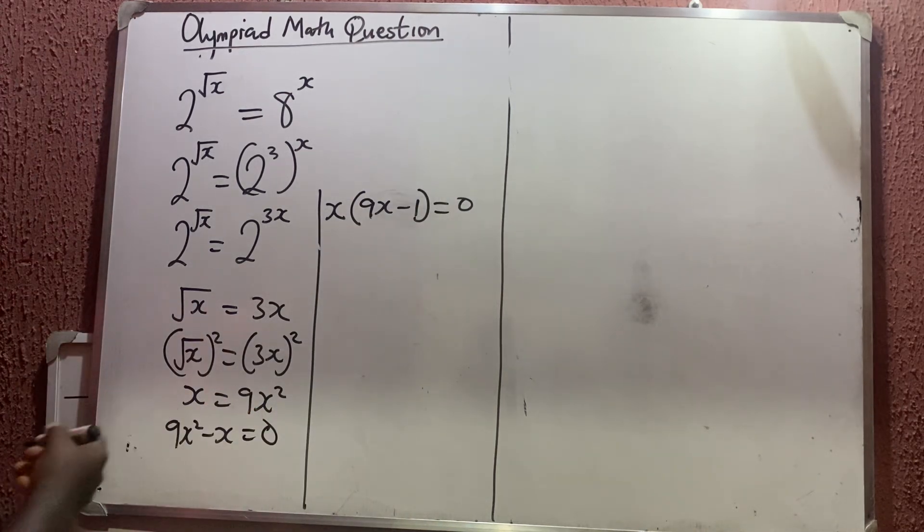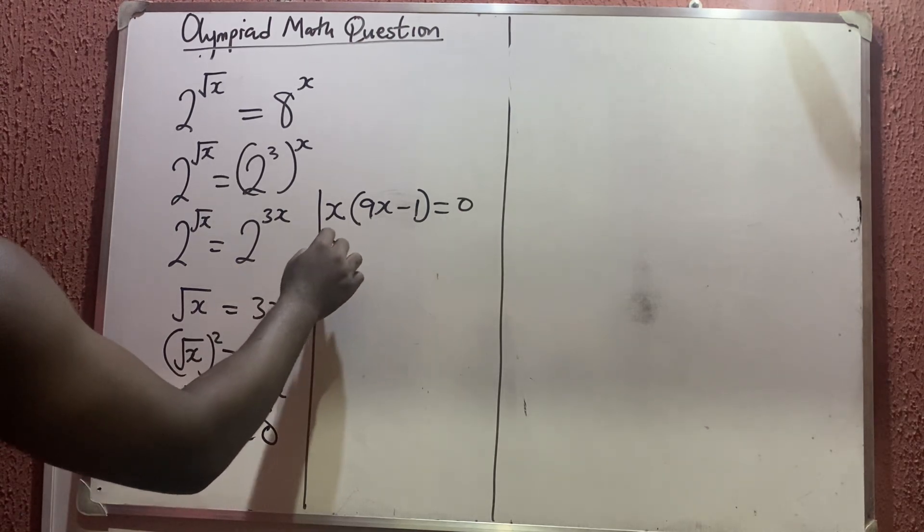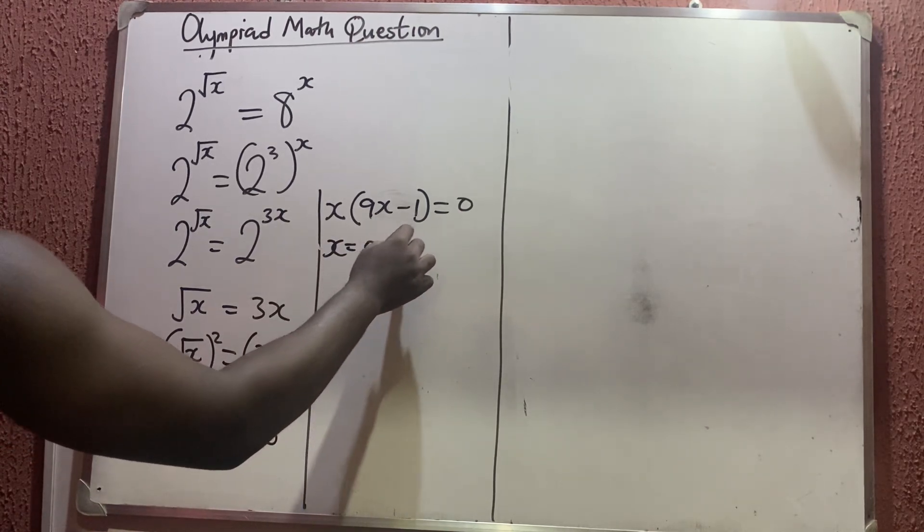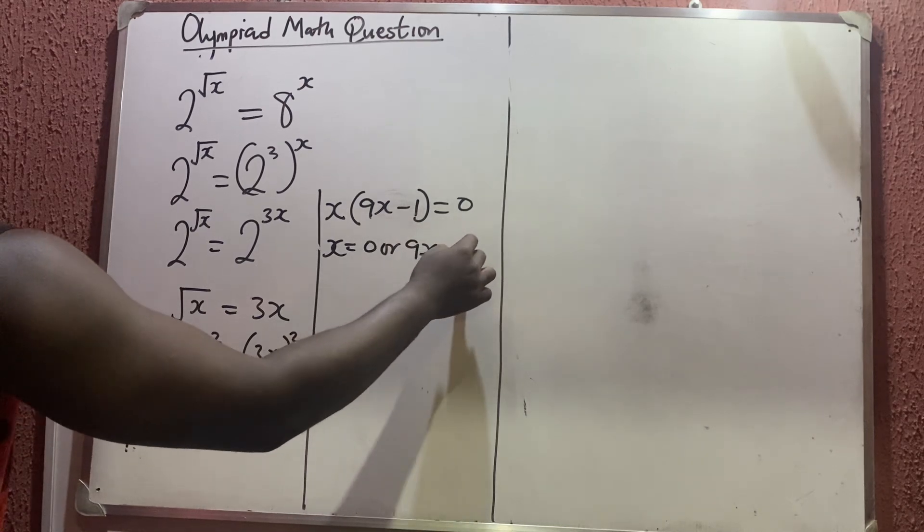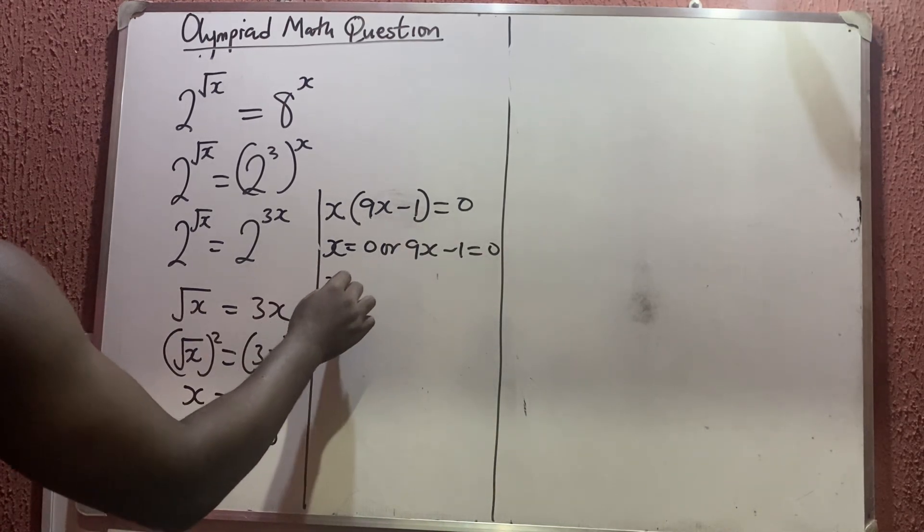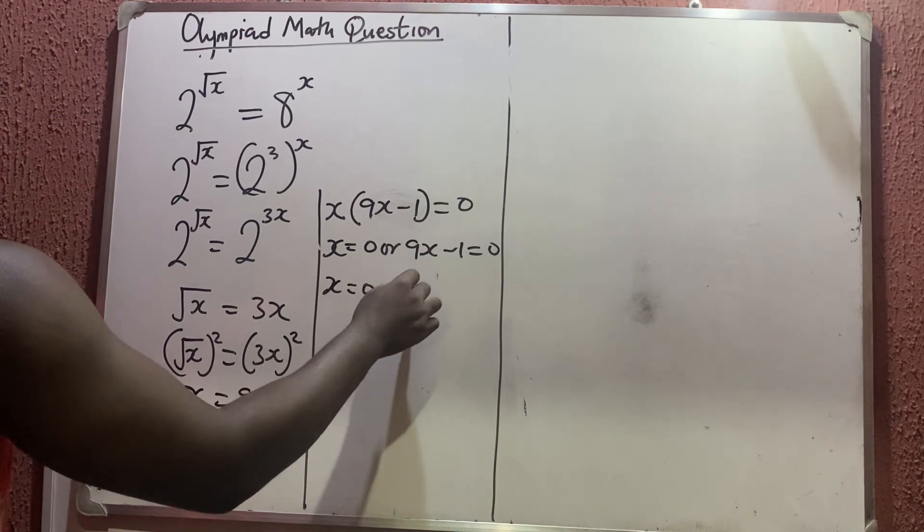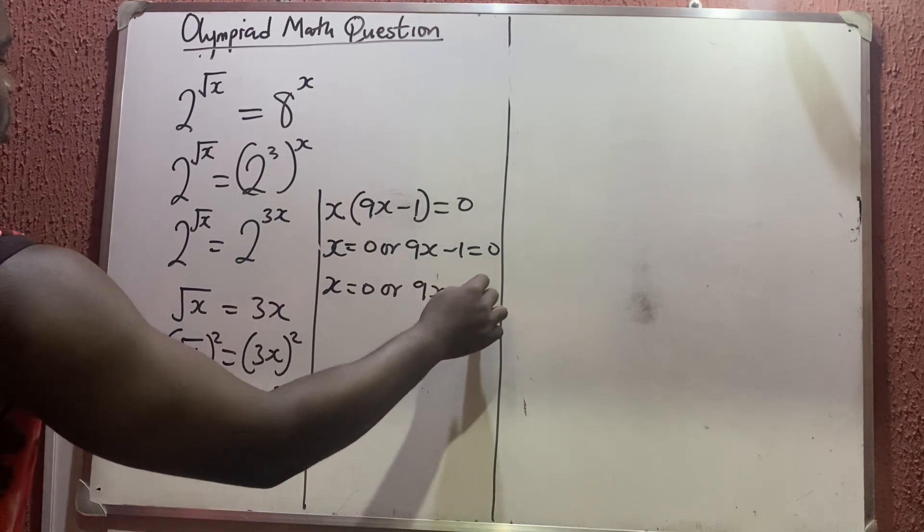So what does it mean? When the product of 2 things is equal to 0, automatically one of them must be 0. So we have that x is equal to 0, or 9x minus 1 is equal to 0. So x is equal to 0, or 9x is equal to 1.